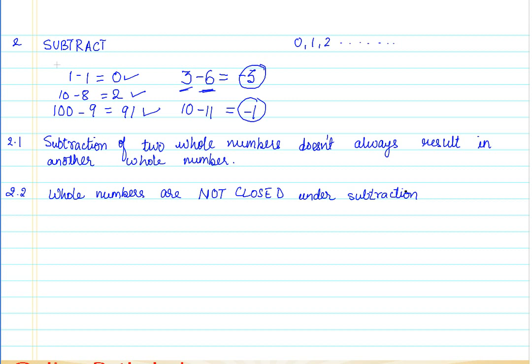Okay, so we have just checked the closure property. Now let's just summarize. We have checked the closure property for addition and subtraction. So what is our summary?